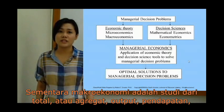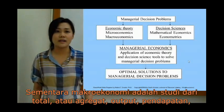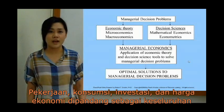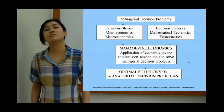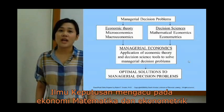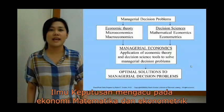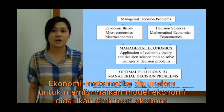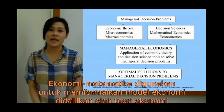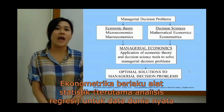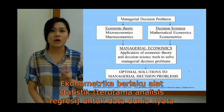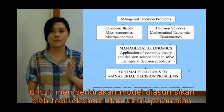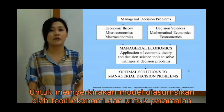Macroeconomics is the study of total or aggregate output, income, employment, consumption, investment, and price of the economy as a whole. Decision science refers to mathematical economics and econometrics. Mathematical economics is used to formalize the economic models postulated by economic theory. Econometrics applies statistical tools, primarily regression analysis, to real-world data to estimate models postulated by economic theory and for forecasting.